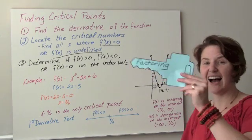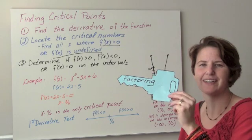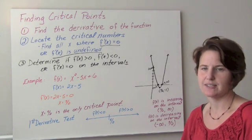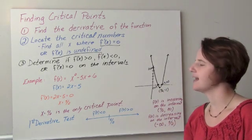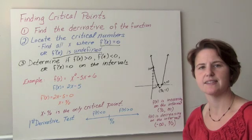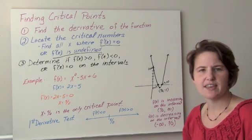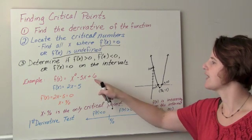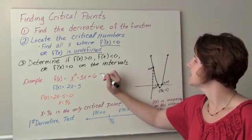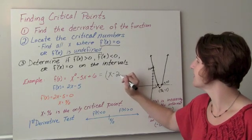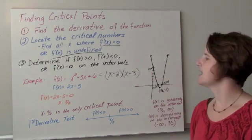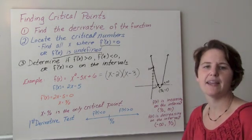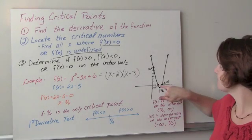A key point is factoring — we want to be able to factor, and this is an algebra skill. I want to look at the function f of x equals x squared minus 5x plus 6. To get the x-intercepts, I would try to factor this function. x squared minus 5x plus 6 equals x minus 2 times x minus 3, and that only equals 0 when x is either 2 or 3, so I have two x-intercepts: the point (2, 0) and the point (3, 0).